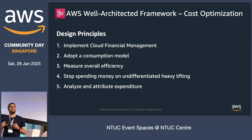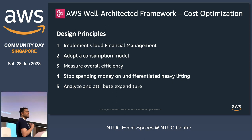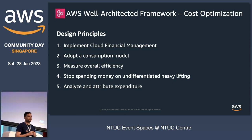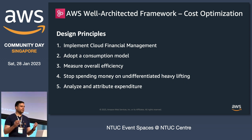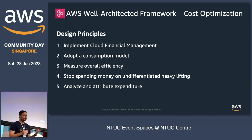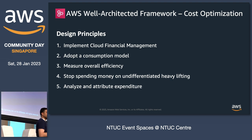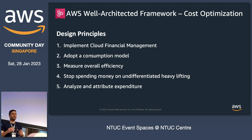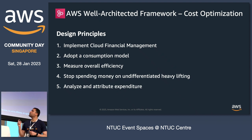The second principle is to adopt a consumption model — pay only for the computing resources you need, and increase or decrease usage based on your business demands. A clear example is the different environments we all have. You really don't need to run all of these environments all the time. We work eight hours a day, 40 hours per week — so why run them for 168 hours per week? Shutting down resources you don't need can result in savings of up to 75%.